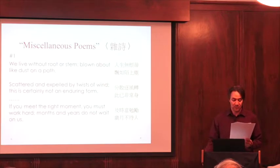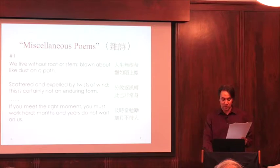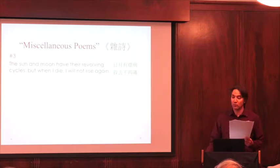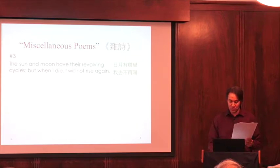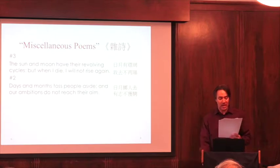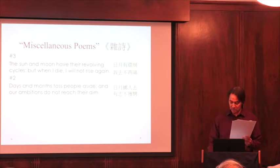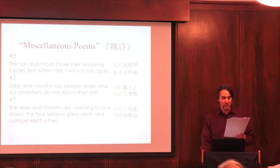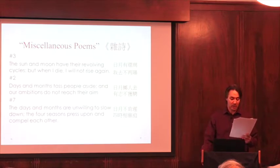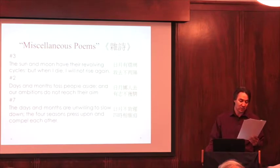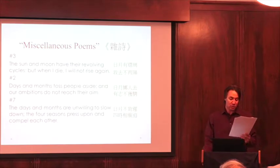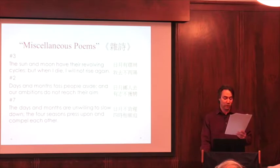In this poem, Tao also uses the plant imagery to segue into a discussion about the way in which our selves do not last long in comparison with other things in the world. Like the poet's realization when conversing with the firewood gatherer in Returning to Live on the Farmstead, times change before human beings are ready for change. As Tao says in the first miscellaneous poem: If you meet the right moment, you must work hard. Months and years do not wait on us. This theme of being dislocated in time occurs throughout Tao's miscellaneous poems.